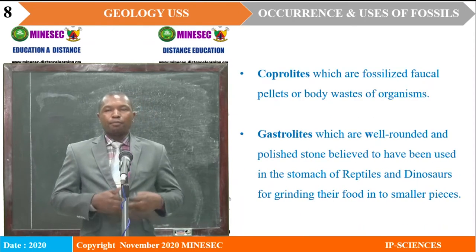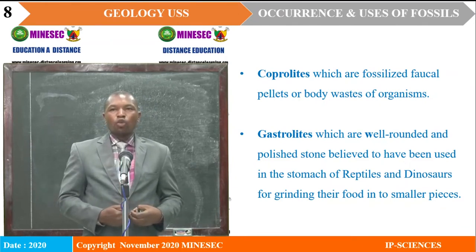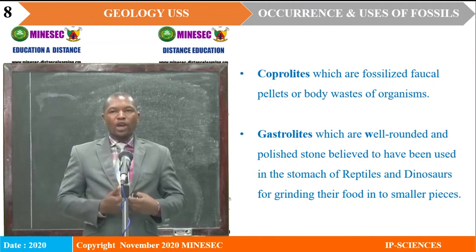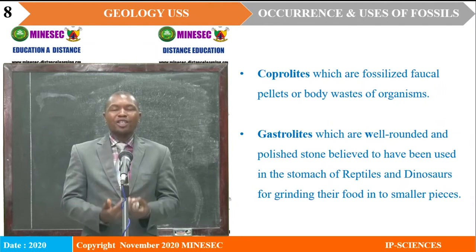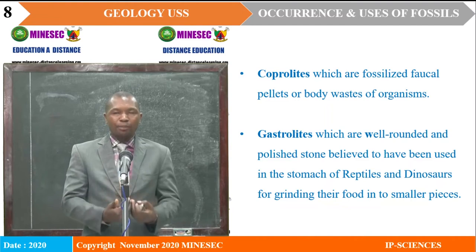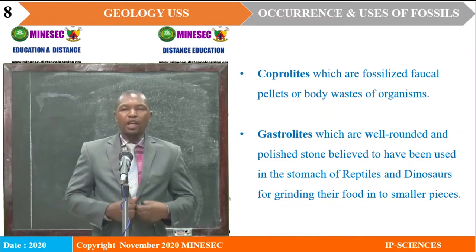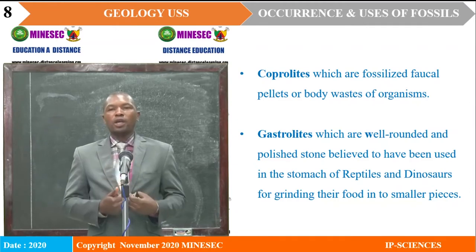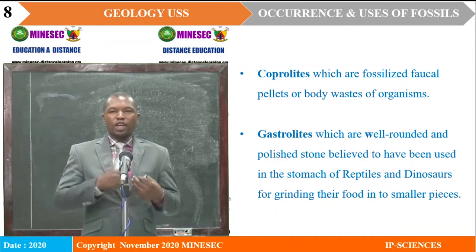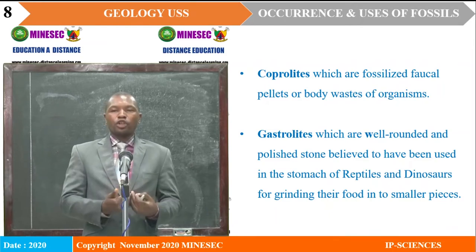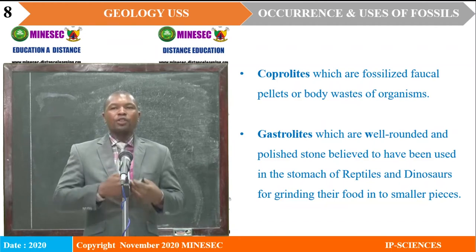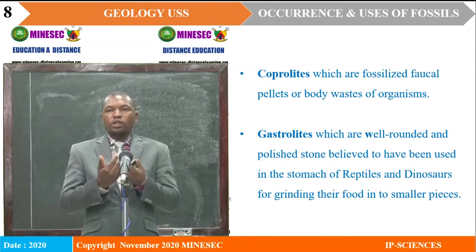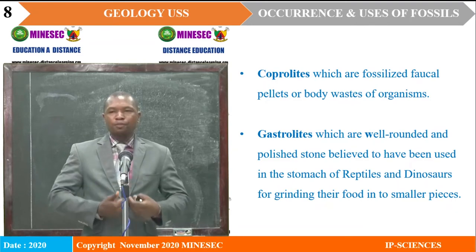We have coprolites — by coprolites we mean ancient feces, which are fossilized. The organisms that lived in that area had to defecate or send out waste, and after some time the waste was preserved and we can now see it as coprolites, which are interpreted as fossils. Then we have gastroliths. Gastroliths are simply well-rounded and polished stones. We commonly find them in fowl, which use them to grind food to facilitate digestion. When we consider them as fossils, they are most likely related to reptiles and dinosaurs, facilitating their digestion process.